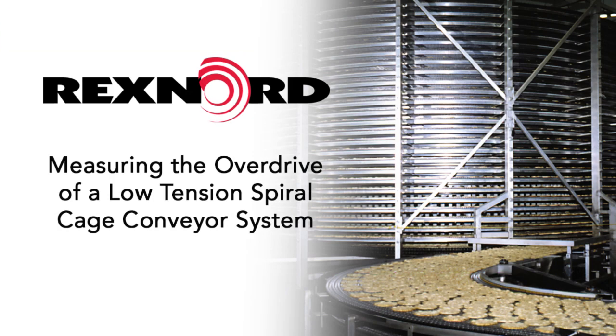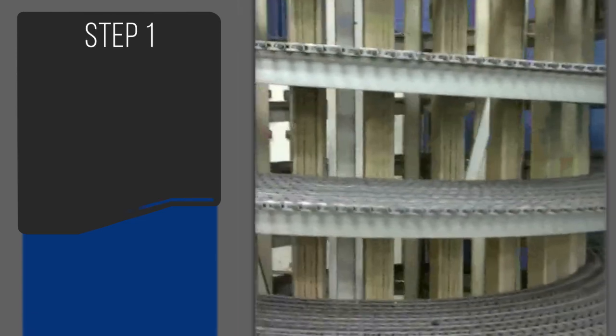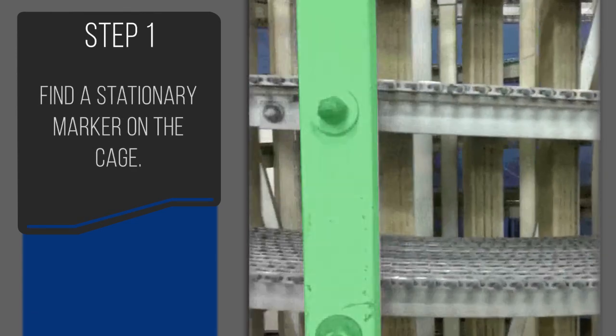This video will demonstrate how to measure overdrive on a low-tension spiral cage conveyor system. Step one, find a stationary marker on the cage.